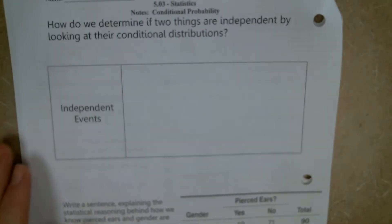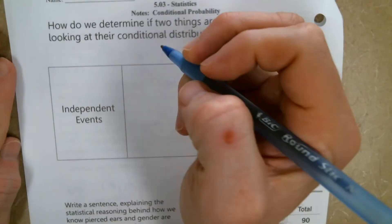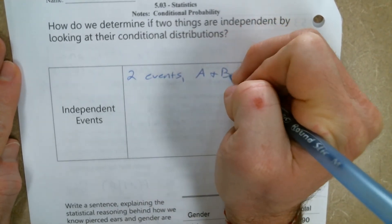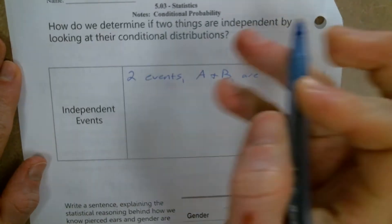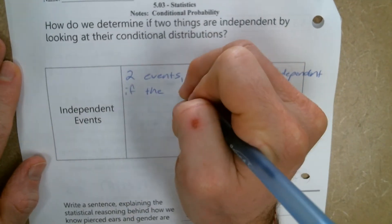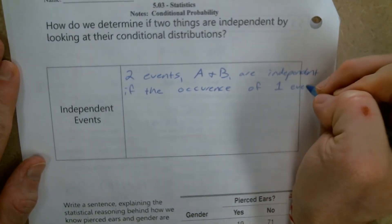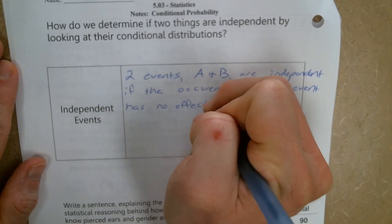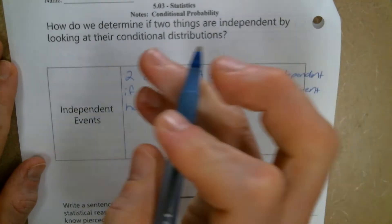Along with conditional probability comes the concept of independence. What does it mean to be independent? Two events, A and B, are independent if the occurrence of one event has no effect on the chance that the other event will happen.